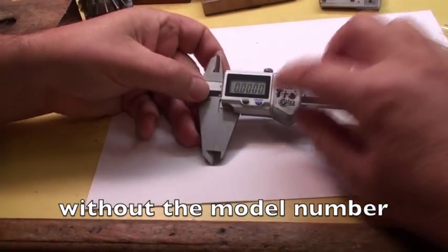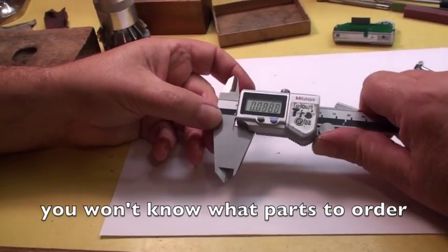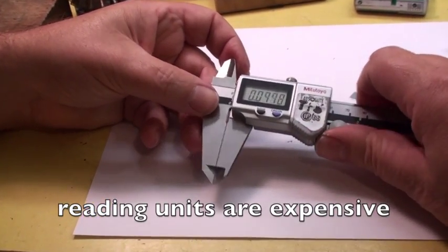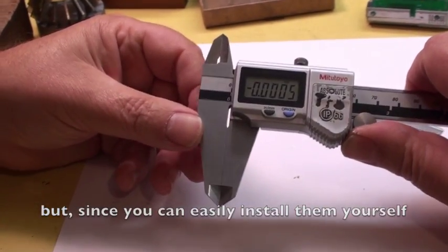Without the model number, you'd never be able to figure out which reading unit you have to buy to make this easy replacement. Reading units are expensive, but because you can do it yourself, you'll be able to have a brand new caliper for less than half the cost.